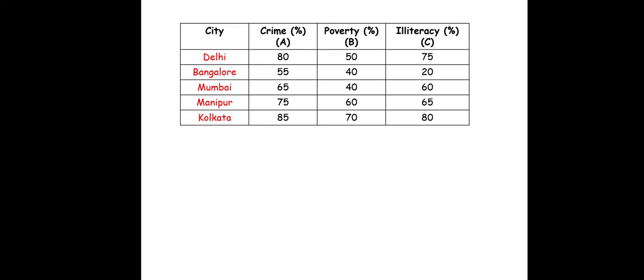We will have an example. We have cities: Delhi, Bangalore, Mumbai, Manipur, and Kolkata. We have crime rates in percentage — Delhi: 80, Bangalore: 55, Mumbai: 65, Manipur: 75, Kolkata: 85. This is just for an example. Crime mainly depends upon two variables: poverty and illiteracy. If poverty is more, crimes are more — poverty is more in Kolkata and crime is also more. Illiteracy values: 75, 20, 60, 65, 80 — illiteracy is more in Kolkata.